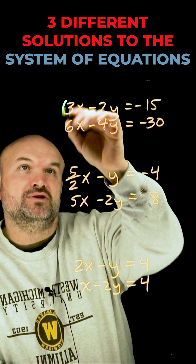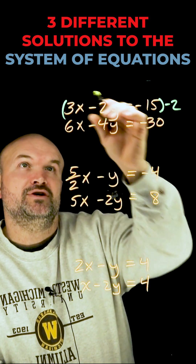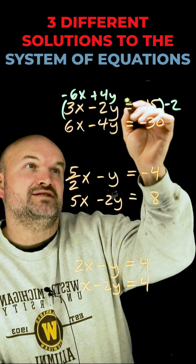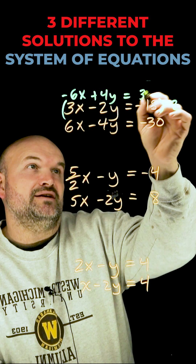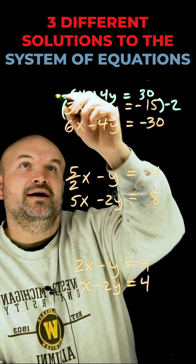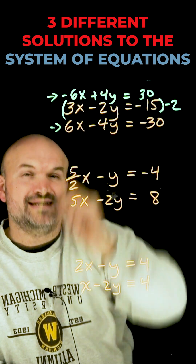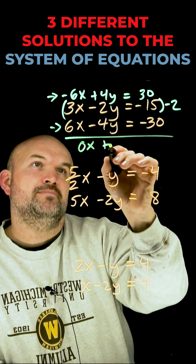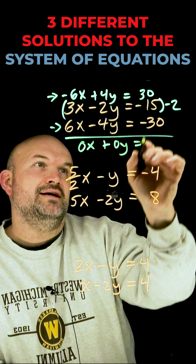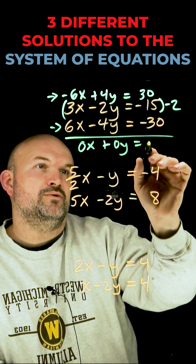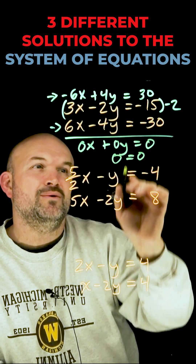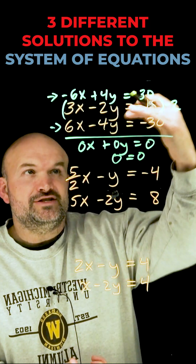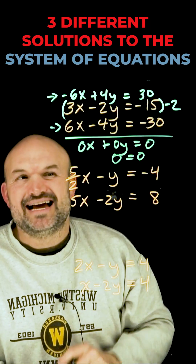For the first one, I'm going to multiply the top equation by negative 2. That gives me negative 6x plus 4y equals positive 30. When I add this top equation with the second equation I preserved, I get 0x plus 0y equals 0. So 0 equals 0 — that means this is an example of infinitely many solutions. These two equations represent the exact same line.